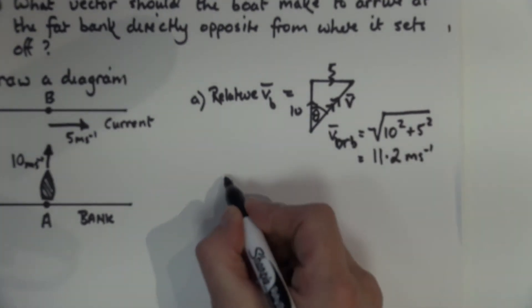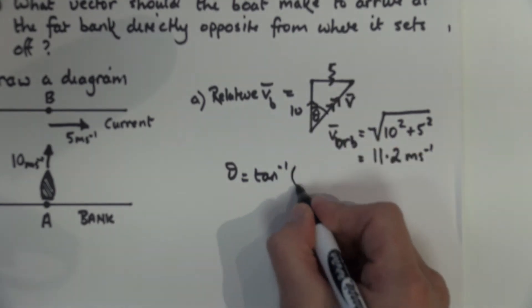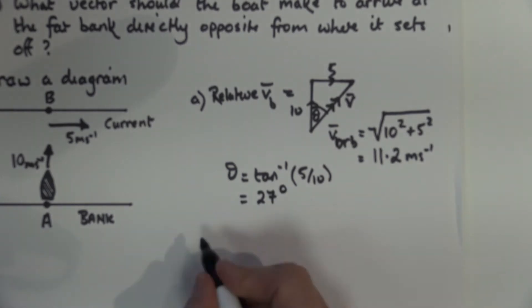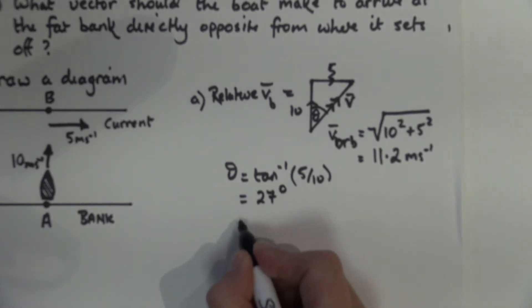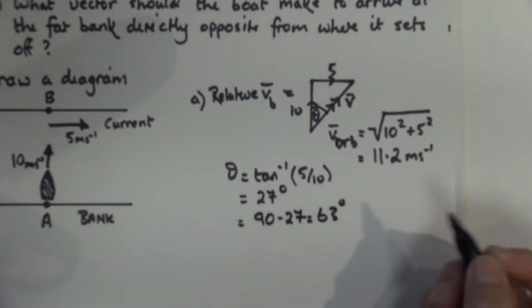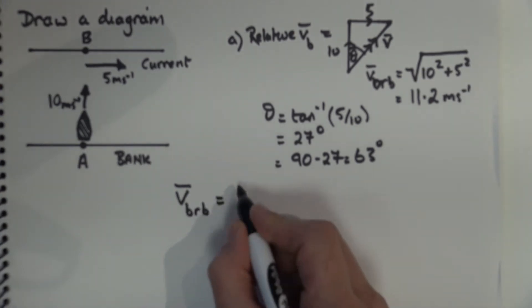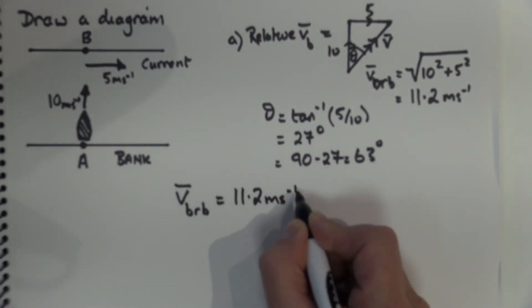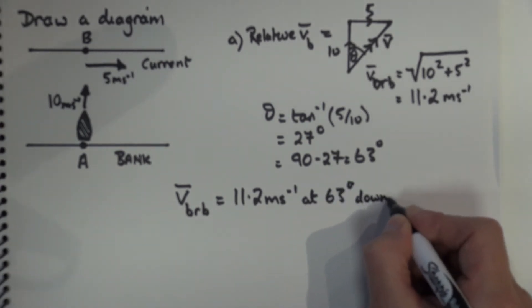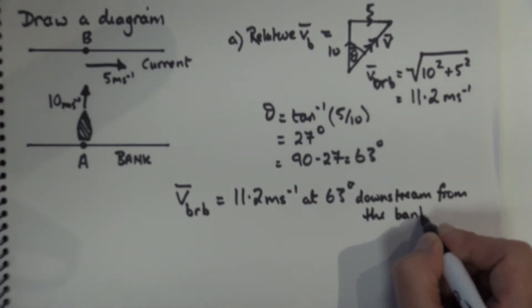I then need to find the angle. The angle in this triangle will be tan⁻¹ of 5 over 10, which gives an angle of 27 degrees. To find the angle relative to the bank it's 90 minus 27, which equals 63 degrees relative to the bank downstream. So the velocity of the boat relative to the bank is 11.2 metres per second at 63 degrees downstream from the bank. That's question A sorted.